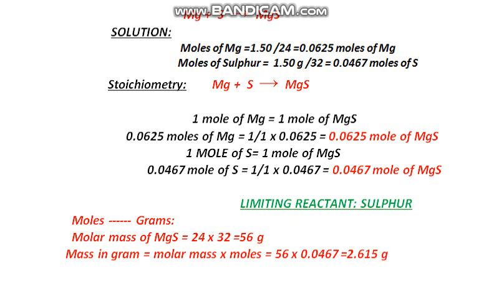If you calculate this, the answer you get is 2.615 gram. I keep telling you all to please use a calculator, because in many cases the values given in your book are often not correct. Please verify by calculating in a calculator. The mass of magnesium sulfide is 2.615 gram — this is obtained when 1.50 gram of magnesium reacted with 1.50 gram of sulfur. So we got 2.615 gram of magnesium sulfide. That was today's lecture. Thank you so much.